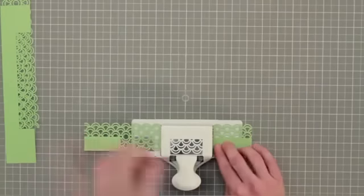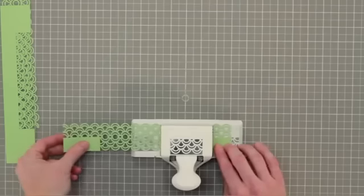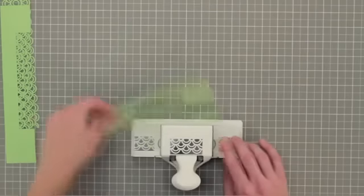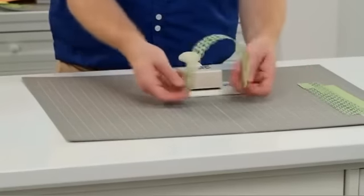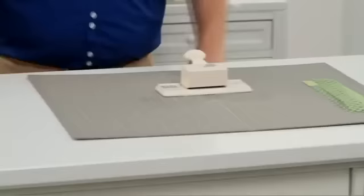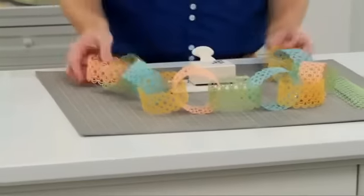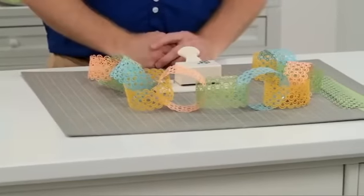Again, punch the entire edge of your strip of paper using the silver markings on the punch wings as a guide. This trim can be used on the edge of a card or a scrapbook page, as a band around a special gift or package, or can even be used on its own to create beautiful punched paper garlands.